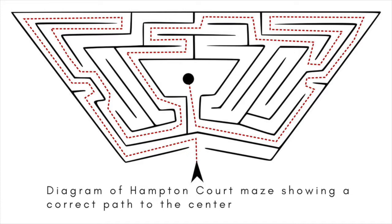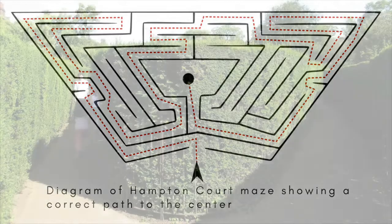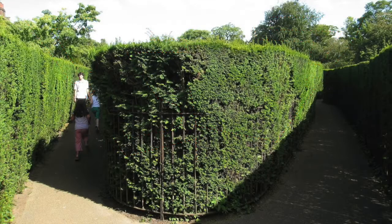Daniel Defoe mentions it in From London to Land's End, as does Jerome K. Jerome in Three Men in a Boat: "We'll just go in here so that you can say you've been, but it's very simple. It's absurd to call it a maze. You keep on taking the first turning to the right. We'll just walk round for ten minutes and then go and get some lunch."